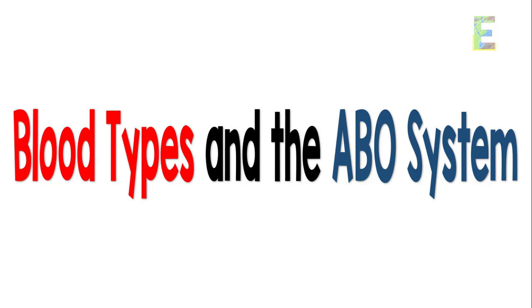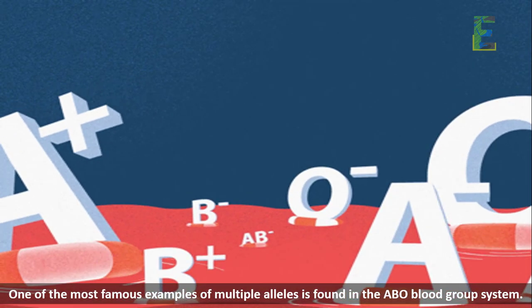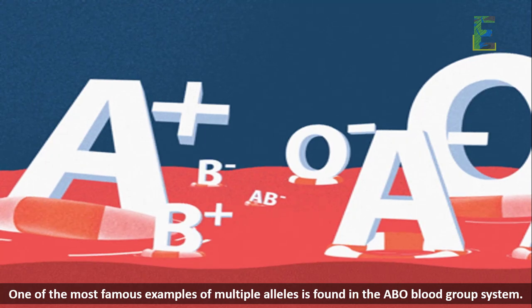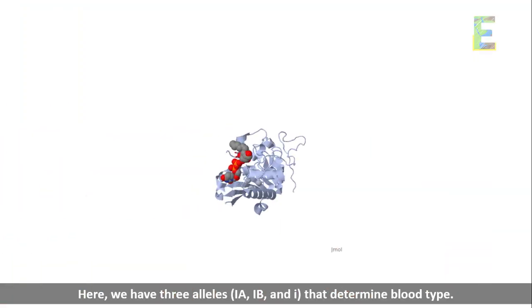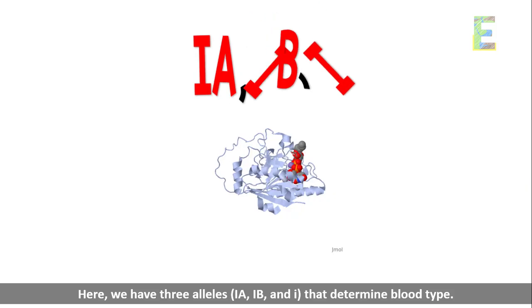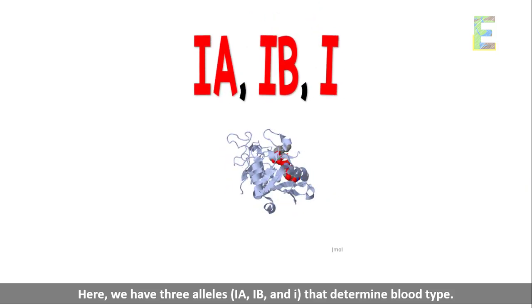Blood types in the ABO system. One of the most famous examples of multiple alleles is found in the ABO blood group system. Here, we have three alleles: Ia, Ib, and I, that determine blood type.